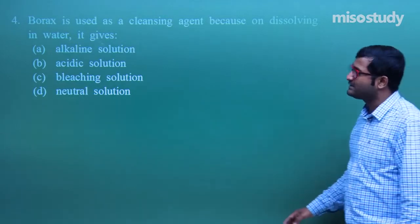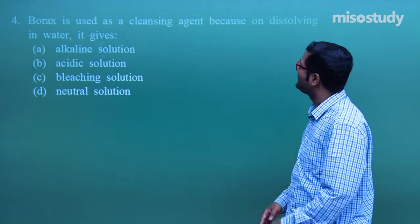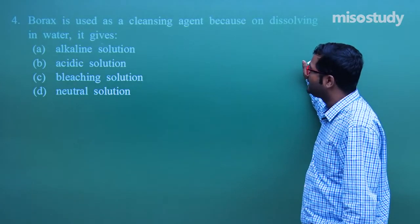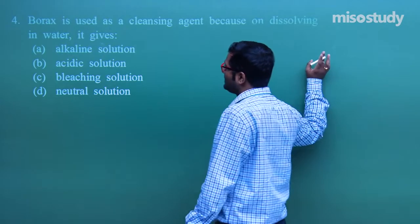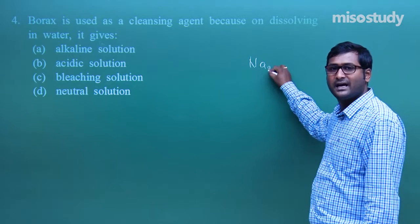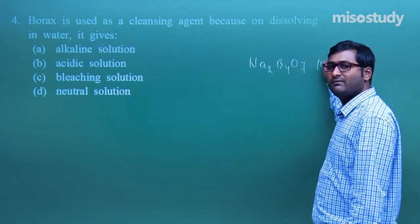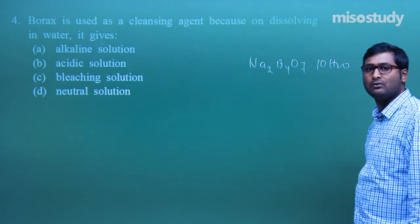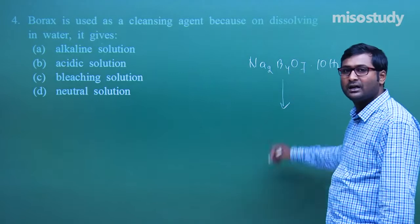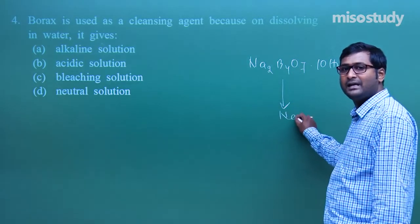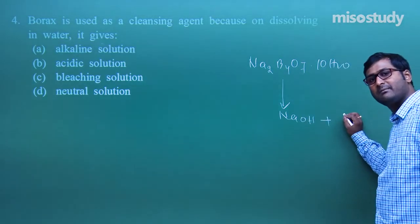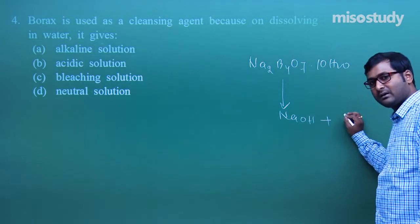The next question: borax is used as a cleansing agent because on dissolving in water it gives which type of solution? The formula of borax is Na₂B₄O₇·10H₂O. When dissolved in water, it produces NaOH and H₃BO₃.